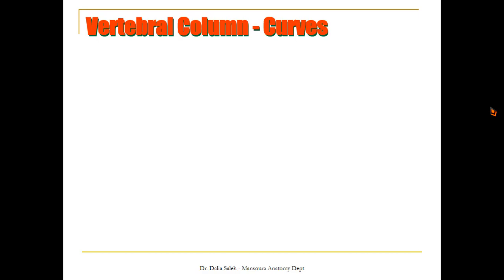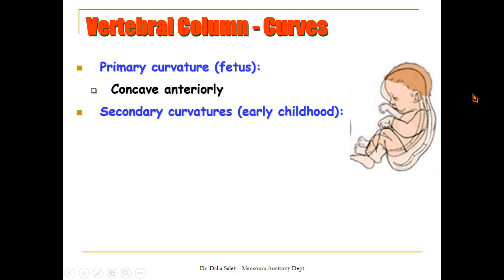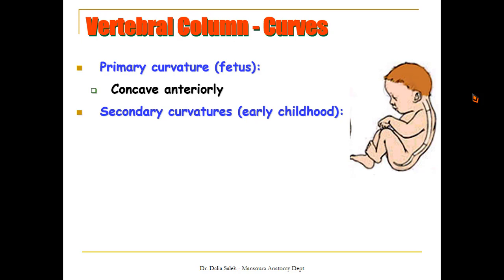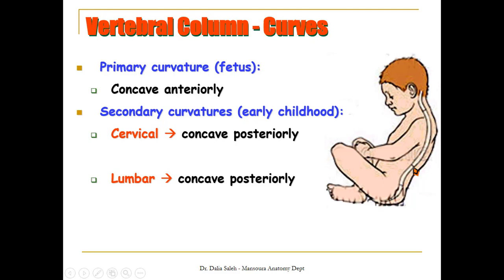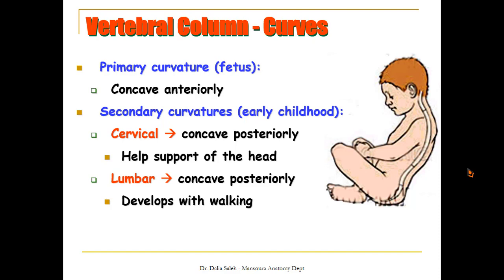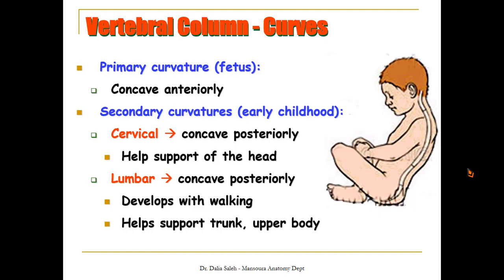What about the curves of the vertebral column? There are two types of curves. Primary curves appear in the fetus and are concave anteriorly. Secondary curvatures appear early after birth — we have two of them: the cervical curve, which is concave posteriorly, and the lumbar curve, which is also concave posteriorly. The cervical curve helps the child support the head, while the lumbar curve develops when the baby begins standing and walking.